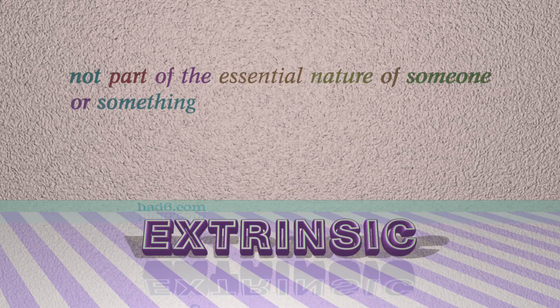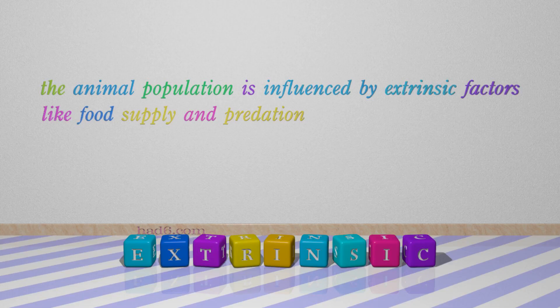Number 7: Extrinsic, which means not part of the essential nature of someone or something. For example, the animal population is influenced by extrinsic factors like food supply and predation.